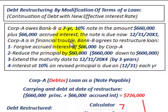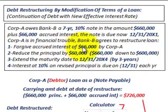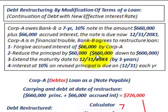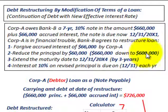Corporation A is in financial trouble, so Bank B agrees to restructure the loan. They're going to forgive the accrued interest of $66,000 that Corp A owes them, and they're going to reduce the principal by $60,000. Currently Corporation A owes $660,000 on the principal, but it's going to be reduced down to $600,000. That's what Corporation A is going to have to pay back in the principal amount.